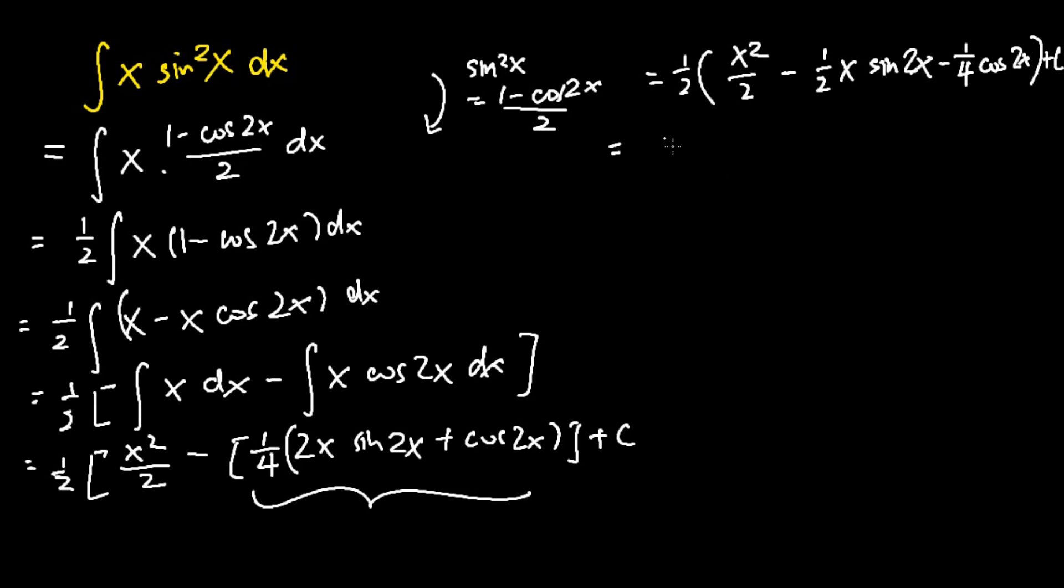And then what I do is I will factorize half across the term. I will get 1 quarter x squared minus x sine 2x minus half cosine 2x plus c. And this would be the final answer to the integration of x sine square x dx.